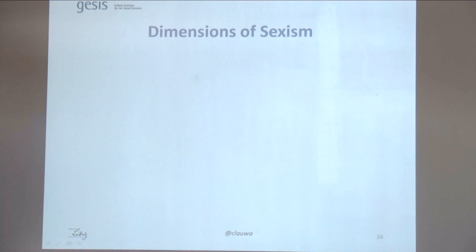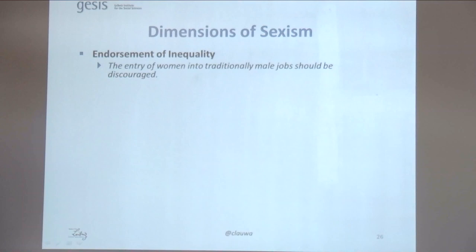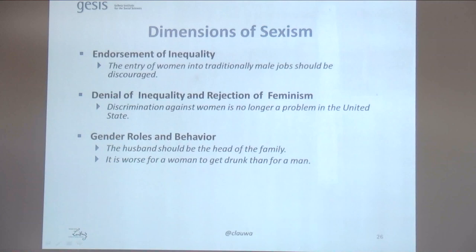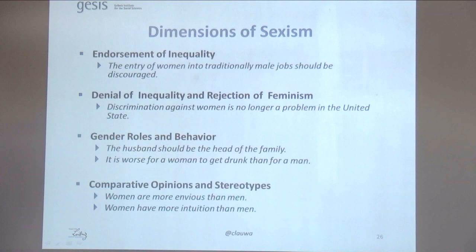The dimensions of sexism captured in this new test corpus come from four dimensions of the scales. First, endorsement of inequality — sentences like 'the entry of women into traditional male jobs should be discouraged.' Second, denial of inequality or rejection of feminism — sentences like 'discrimination against women is no longer a problem in the United States.' Third, gender roles and gendered behavior — things like 'the husband should be the head of the family' or 'it's worse for a woman to get drunk than for a man.' Fourth, comparative opinions and stereotypes — sentences like 'women have more intuition than men' or 'women are more envious than men.' For all four dimensions, we now have positive and negative examples that are similar.